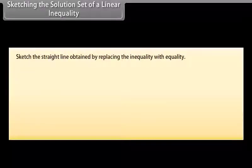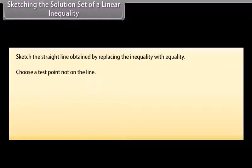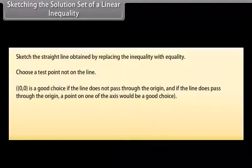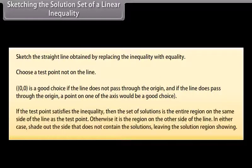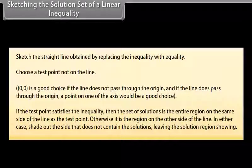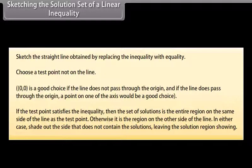To sketch a linear inequality: Sketch the straight line obtained by replacing the inequality with equality. Choose a test point not on the line — (0, 0) is a good choice if the line does not pass through the origin; if the line does pass through the origin, a point on one of the axes is a good choice. If the test point satisfies the inequality, the solution set is the entire region on the same side of the line as the test point; otherwise it is the region on the other side. Shade out the side that does not contain the solutions, leaving the solution region showing.